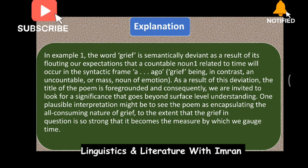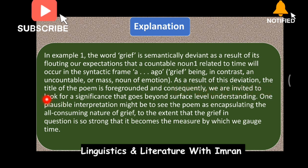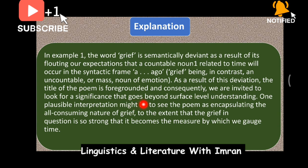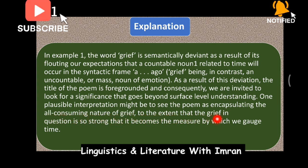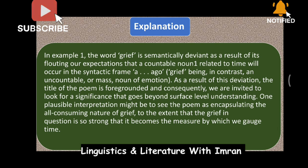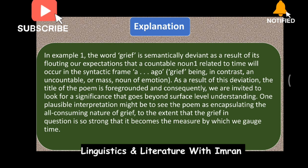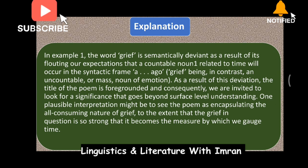Foregrounding is achieved through linguistic deviation. As a result of this deviation, the title of the poem is foregrounded and consequently we are invited to look for a significance that goes beyond surface-level understanding. One plausible interpretation might be that the poem is encapsulating the all-consuming nature of grief — to the extent that the grief in question is so strong that it becomes the measure by which we gauge time, rather than time measuring grief.